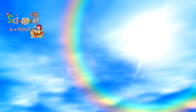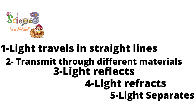Let's revise together the five properties of light. Number one: it travels in straight lines. Number two: it transmits through different materials. Number three: it reflects. Number four: it refracts. And number five: it separates.